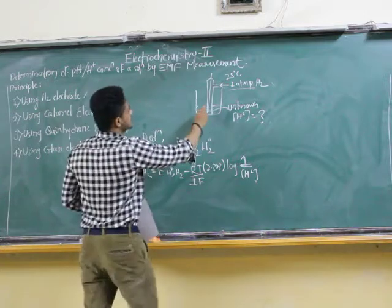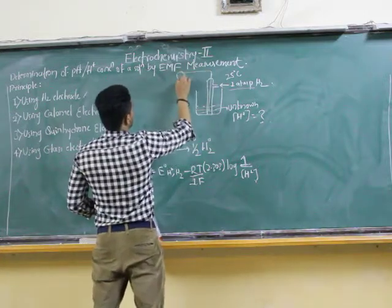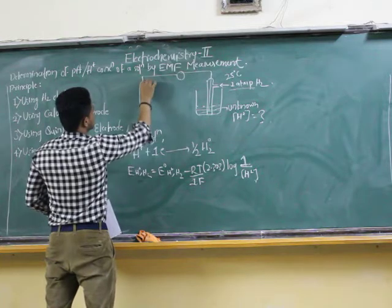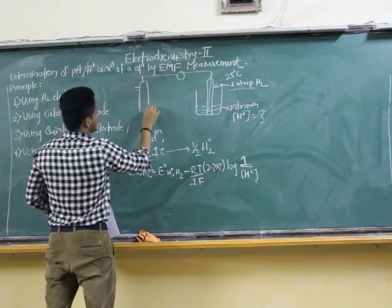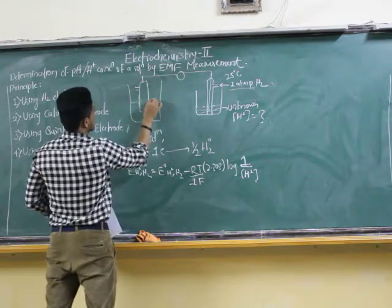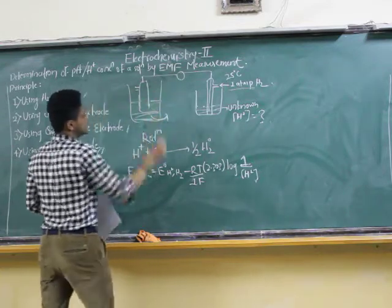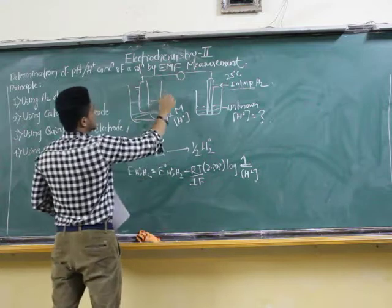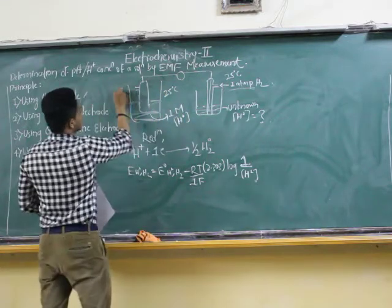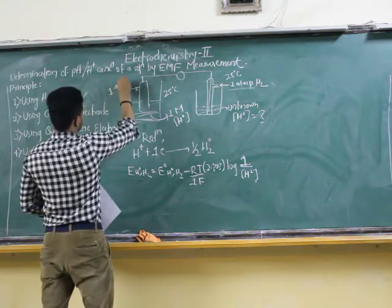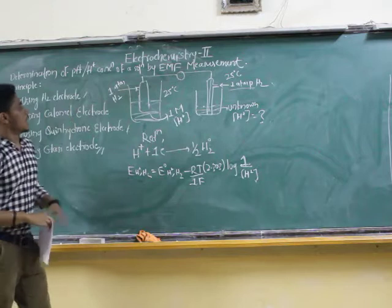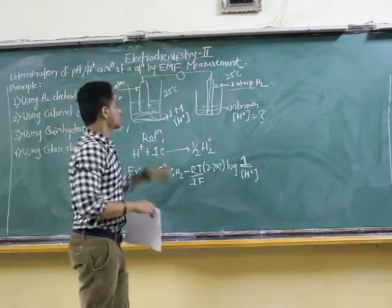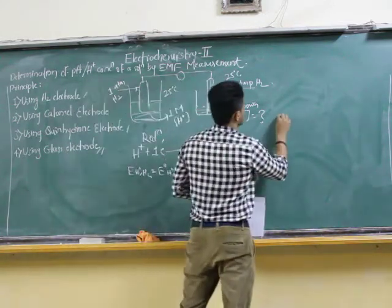Now I am going to combine this electrode with the standard electrode. Through a galvanometer, let me combine it with the standard hydrogen electrode (SHE). The SHE has H⁺ concentration of 1 M, temperature 25°C, and H₂ gas at 1 atm pressure. There will be a reading on the galvanometer showing the EMF of the cell.